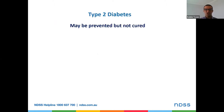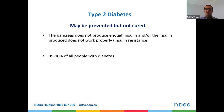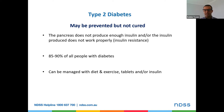So just an overview of what type 2 diabetes is. Type 2 diabetes may be prevented but not cured. Basically the pancreas isn't producing enough insulin, or the insulin that is being secreted doesn't work properly — that's known as insulin resistance. It accounts for about 85 to 90 percent of all people living with diabetes, and management includes physical activity, diet changes, and medication such as oral hypoglycemic agents, tablets, insulin, or other injectables.